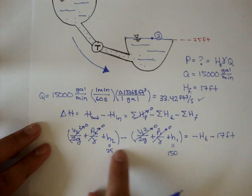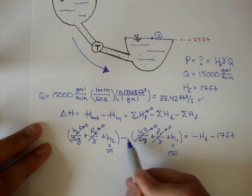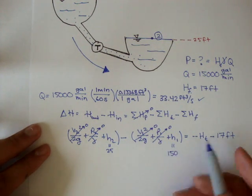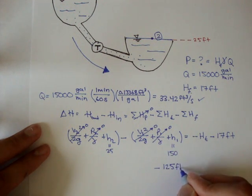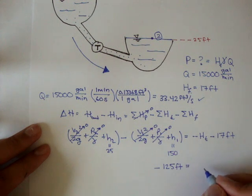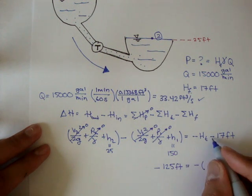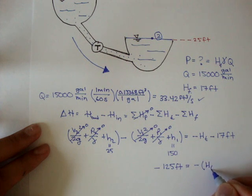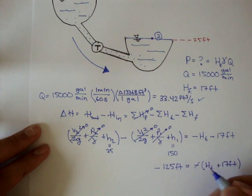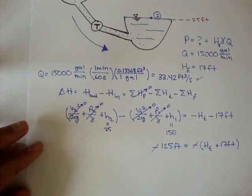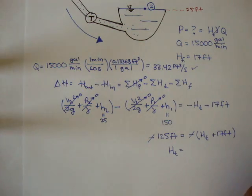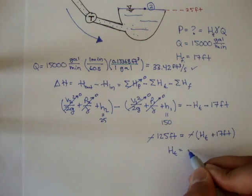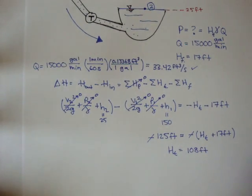And if we rewrite this, we get 25 minus 150, which is negative 125 feet, is equal to minus, I'm going to distribute the negative out, we'll get HT plus 17 feet. And the negatives cancel out. And if we solve for HT, we get HT, or the turbine head, is 108 feet.